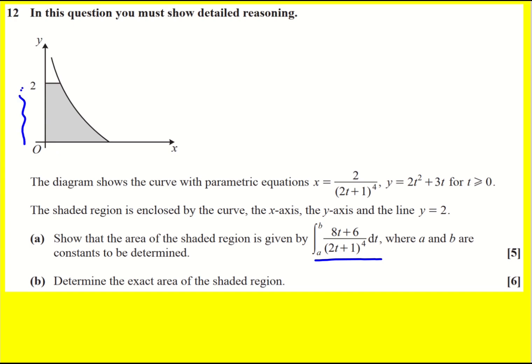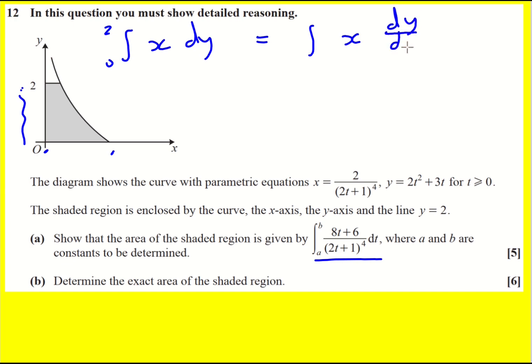This is a topic that used to be on the old specification and has now moved to further maths, but because it's a parametric question and it's the last question, they've thrown it in as a tester. It works in the same way — our integral is going to be from zero to two, and we're actually going to be integrating x with respect to y. Parametrically, that changes to x multiplied by dy/dt, dt, with new limits.